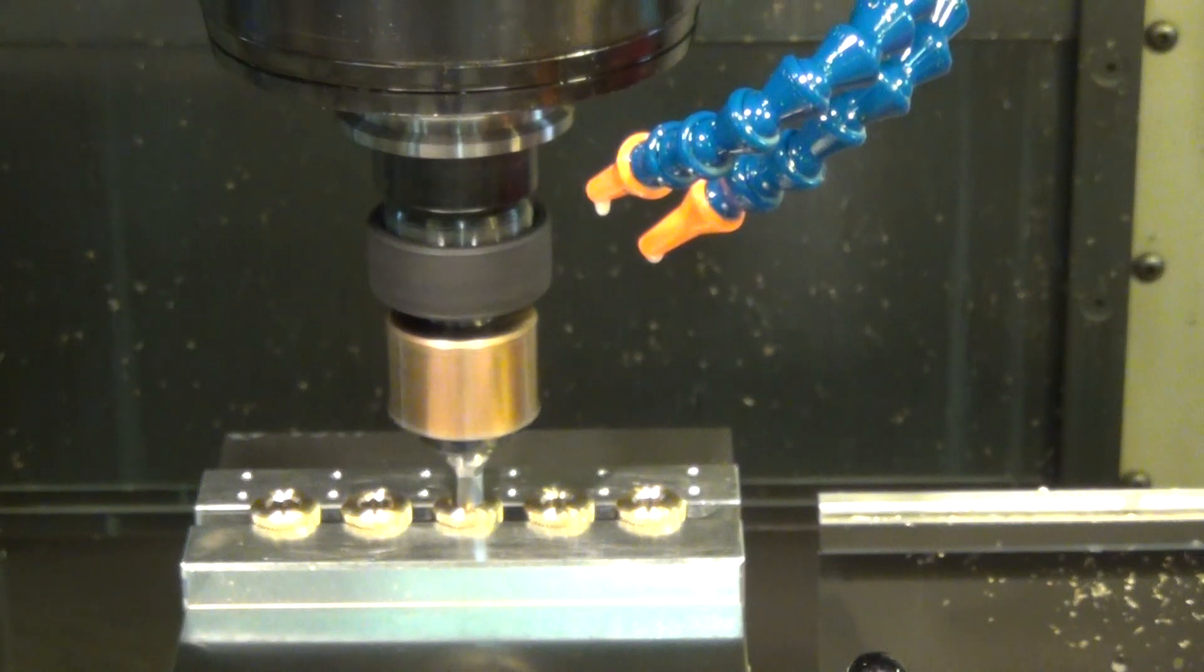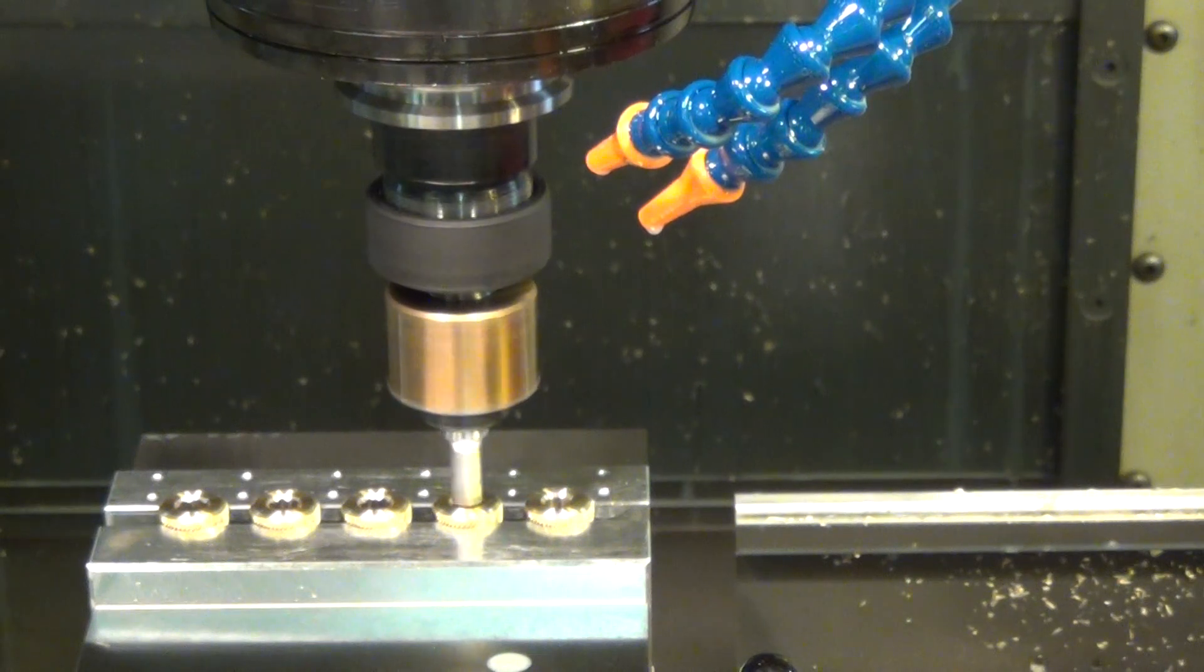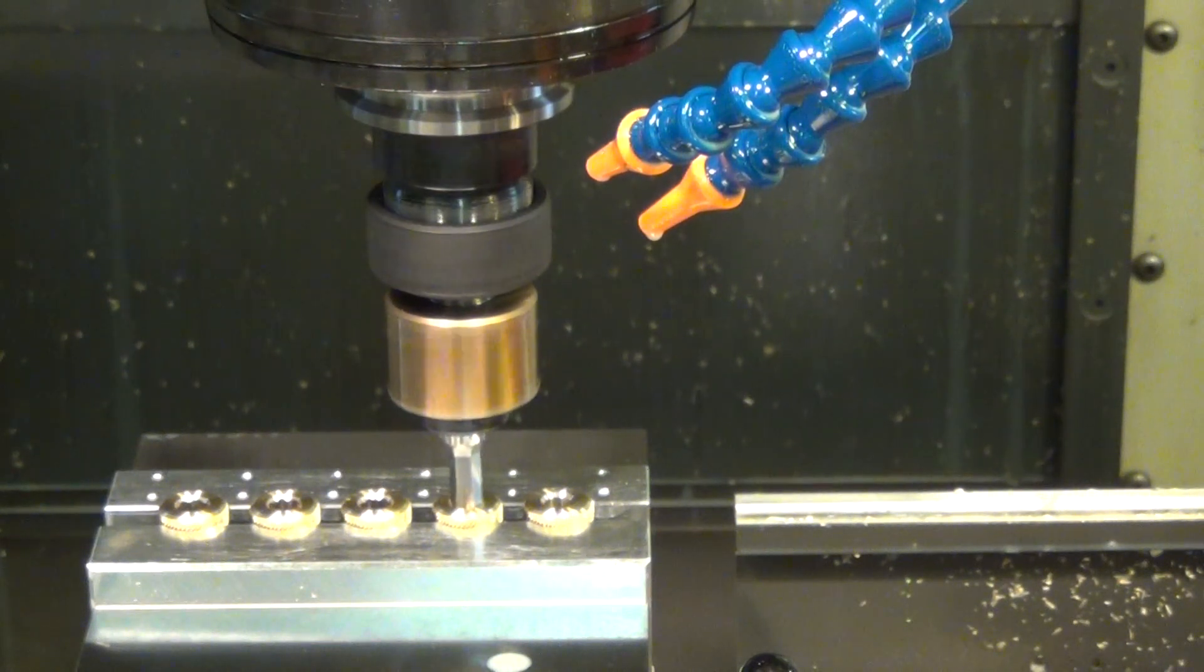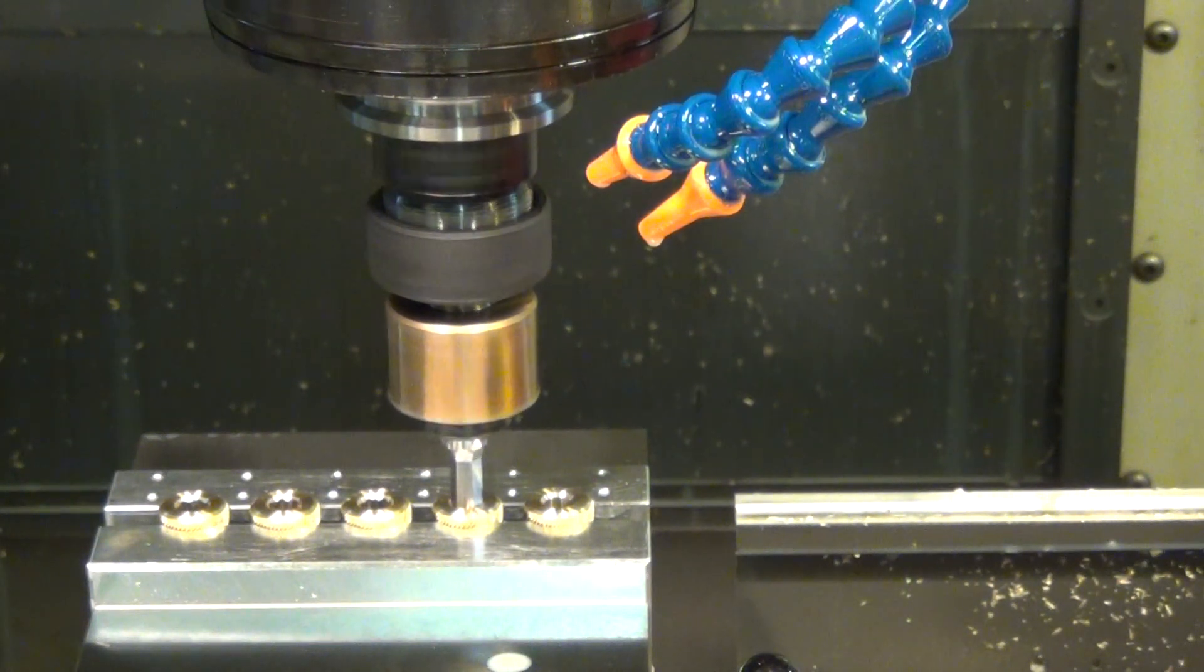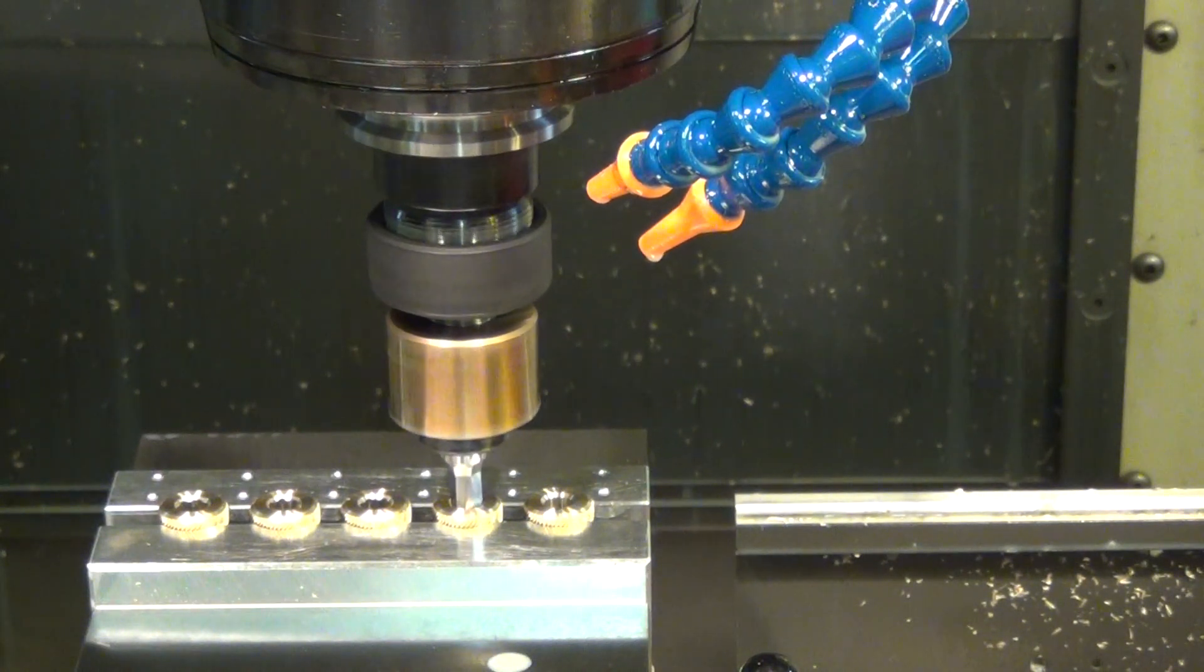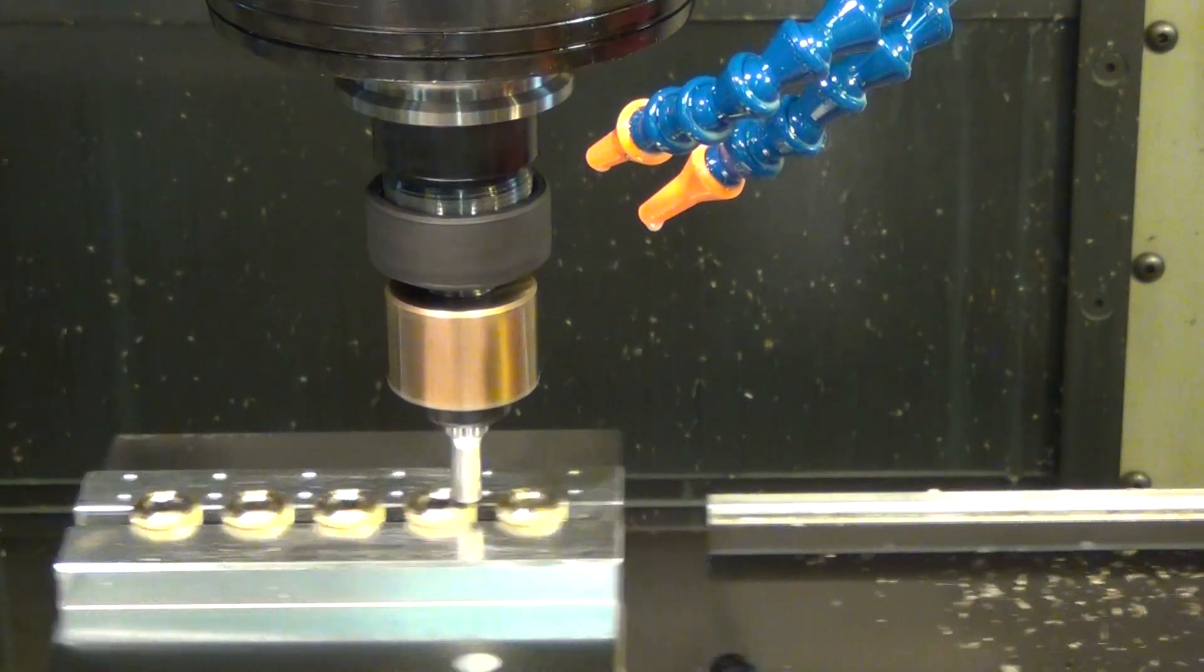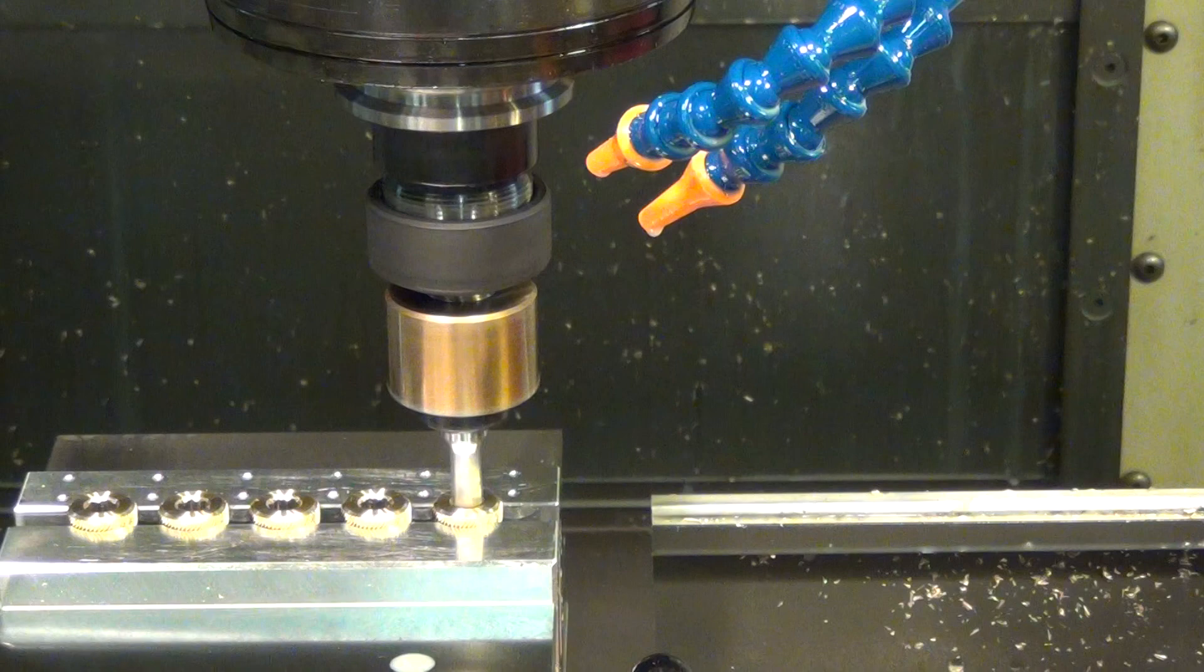This particular broach is made by Polygon Solutions, and it's also the Polygon Solutions broach holder. The holder is the expensive part, and the broaches, they're not cheap either, but the holder is the biggest expense. I run these rotary broaches on small lathes, South Bend lathes, other products, but you can also run them in a milling machine.